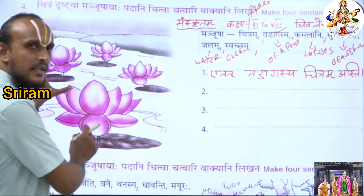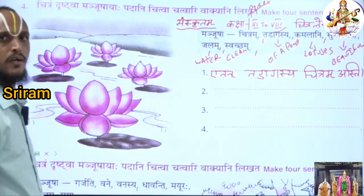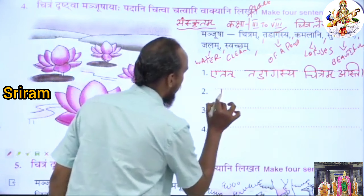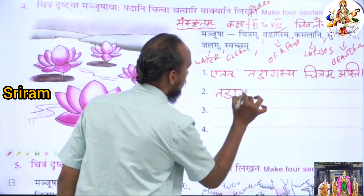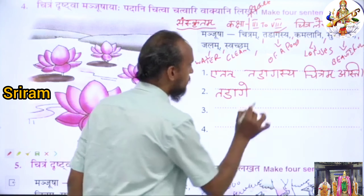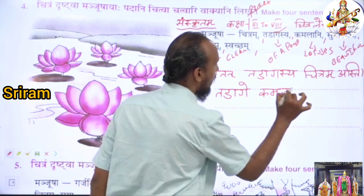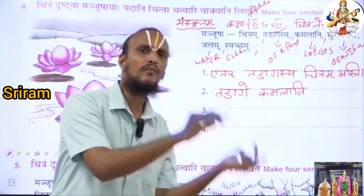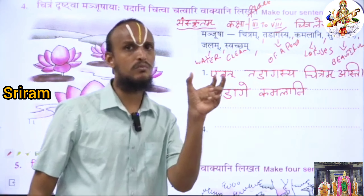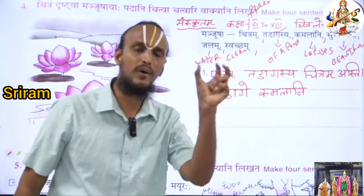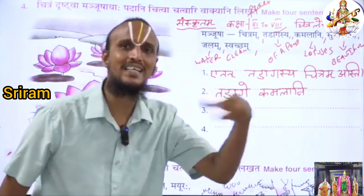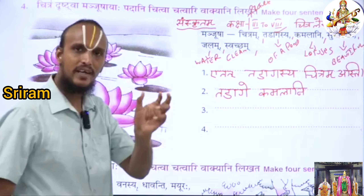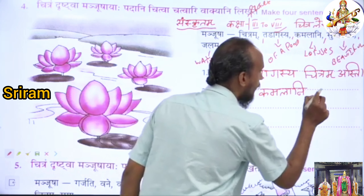In this pond, so many lotuses are blooming. You can easily translate this into Sanskrit. Listen: 'Thadage Kamalani.' Blooming means Vikasati; in plural form, Vikasanti. Children, you have to know so many Dhatus and verb action words in Sanskrit. So the sentence is: 'Thadage Kamalani Vikasanti.'